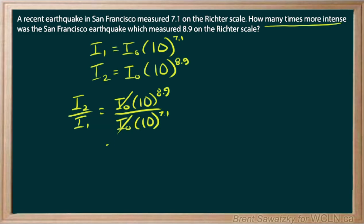And so what we can see is that we have the same base, and using our exponent laws, we just subtract the exponents. So 8.9 minus 7.1.